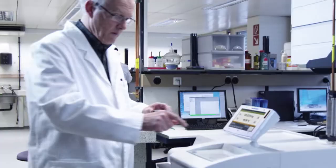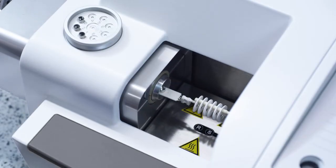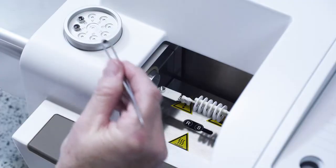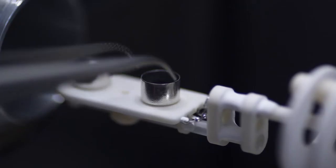Thermogravimetry, or TGA for short, is mainly used to characterize materials with regard to their composition. The Mettler Toledo TGA DSC instruments ensure unbeatable accuracy.